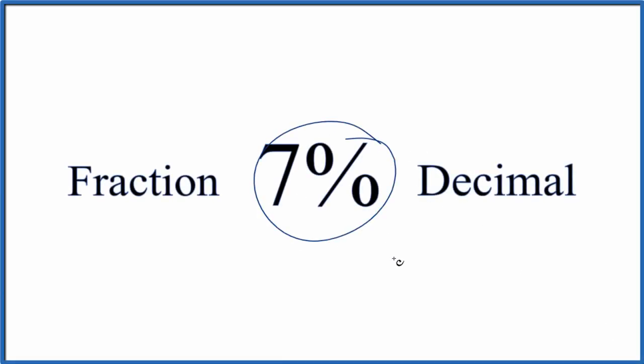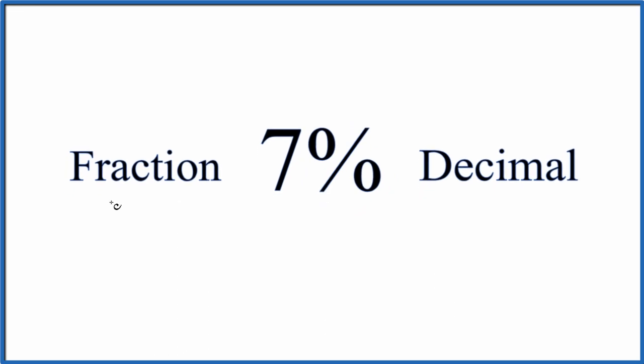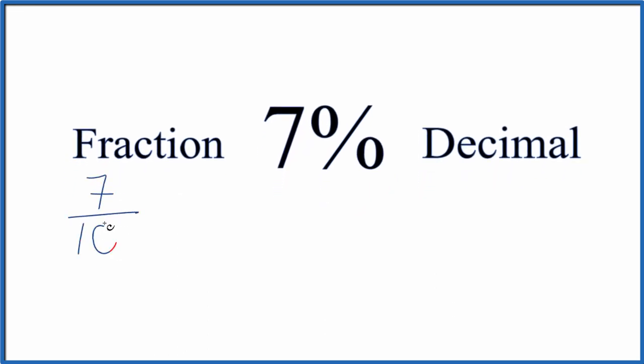Let's write 7% as a fraction and as a decimal. Write off this percent sign here - it means per 100. So we could just say 7 per 100.